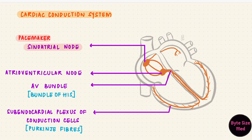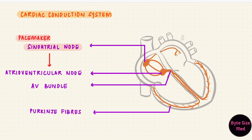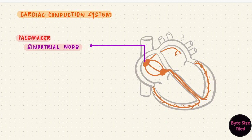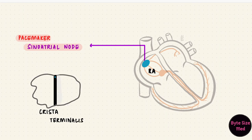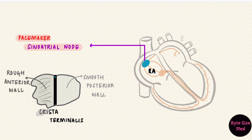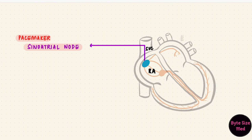Once impulses get generated, they pass through the rest of the pathway unidirectionally. The first structure is the sinoatrial node, located in the right atrium — this is where we're starting. It's located at the upper end of the crista terminalis. If we assume this is the right atrium opened up like a book, this would be the smooth posterior wall and this the rough anterior wall. The junction between these two parts is the crista terminalis, and at the upper end of that we have the sinoatrial node, where the superior vena cava enters the right atrium.